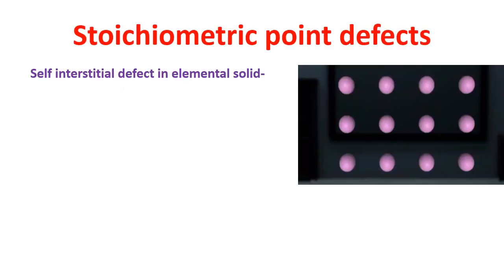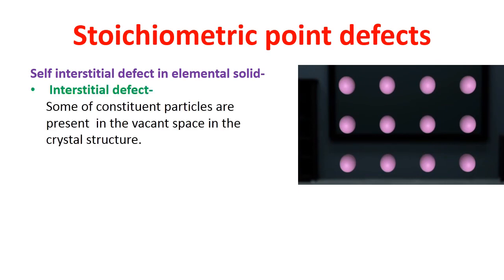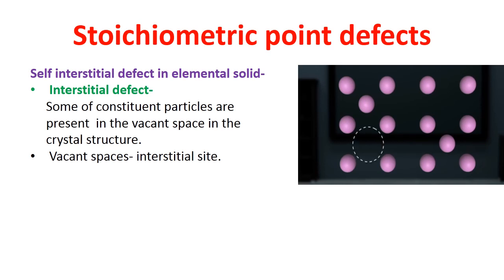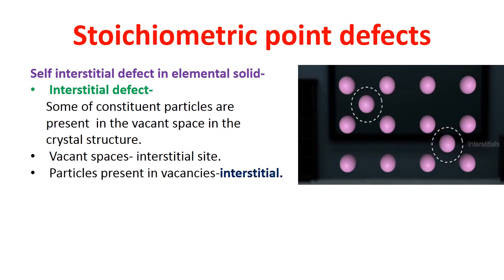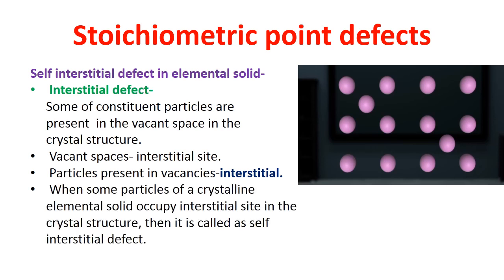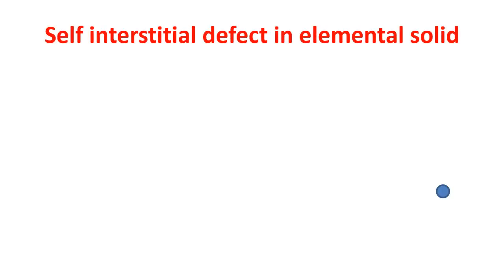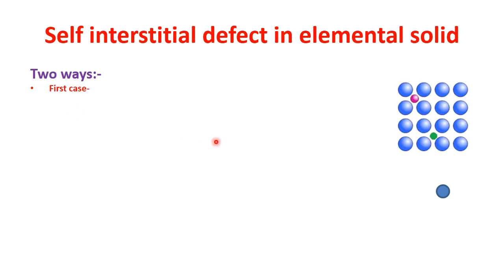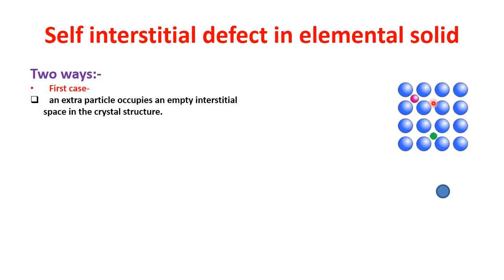The next defect is self-interstitial defect in elemental solids. This defect is caused when some constituent particles — like atoms, ions, or molecules — are present in the vacant spaces in the crystal structure. These vacant spaces are known as interstitial sites, and the particles present in these vacancies are known as interstitials. In the first case, an extra particle occupies an empty interstitial space, and as the number of particles increases, the density of the substance increases without increasing volume.